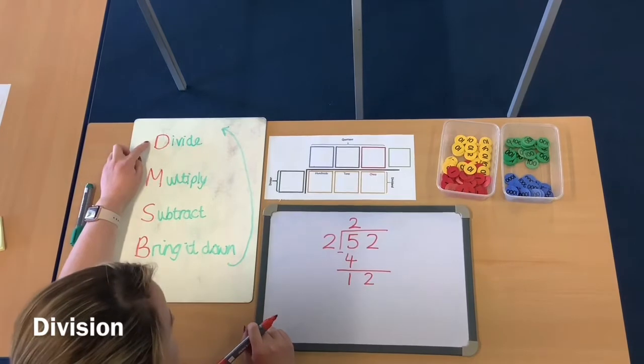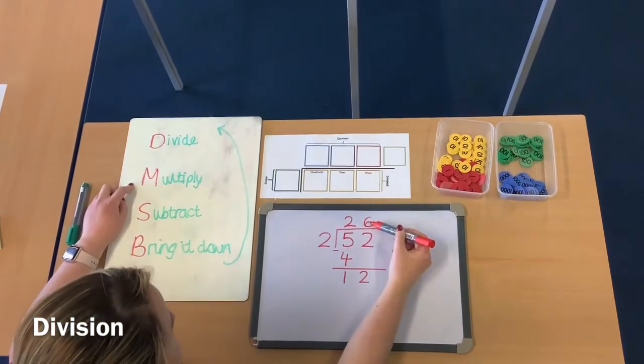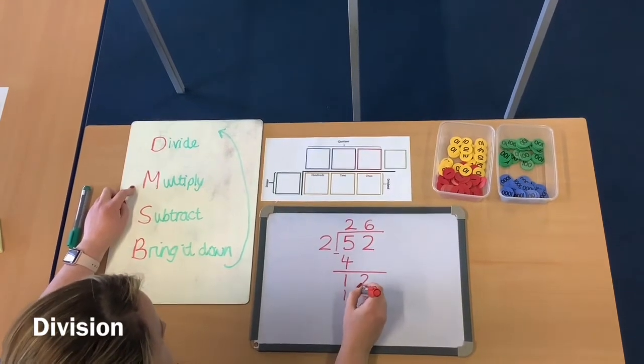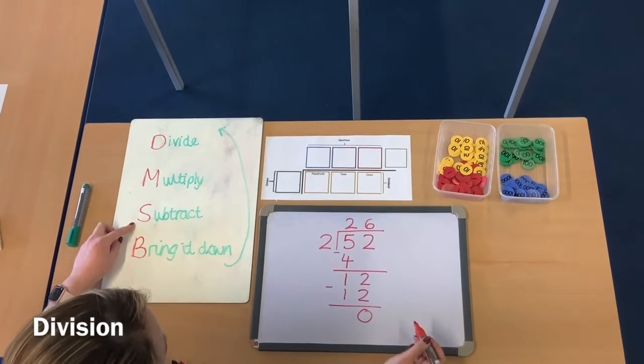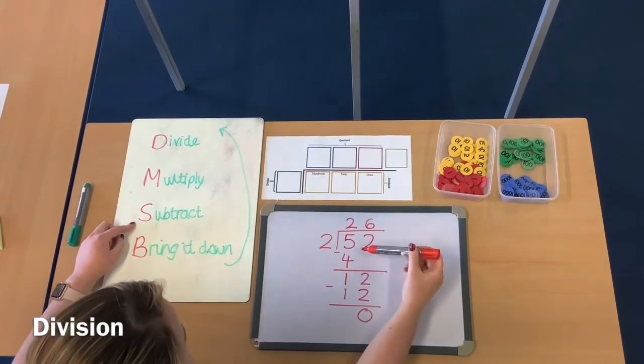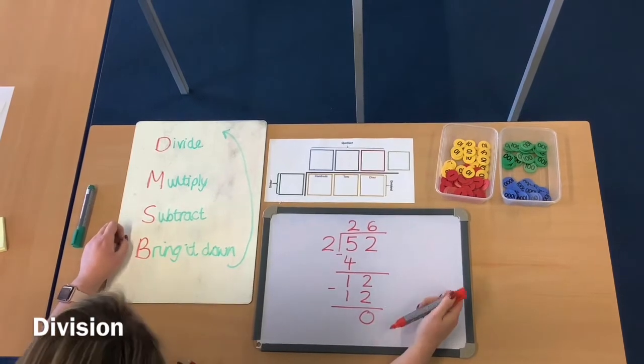So then I'm going to do 12 divided by 2. Back up at step 1. So 12 divided by 2 is 6. Multiply. 6 times 2 is 12. Subtract. 12 take away 12 is 0. So that means that the answer to 52 divided by 2 is 26, and there are no remainders left.